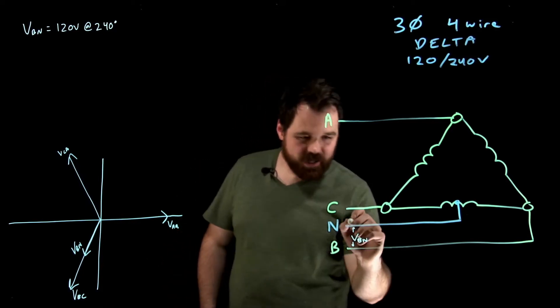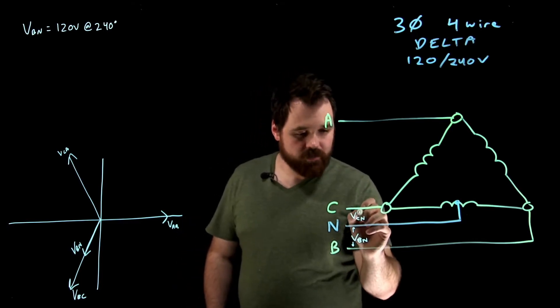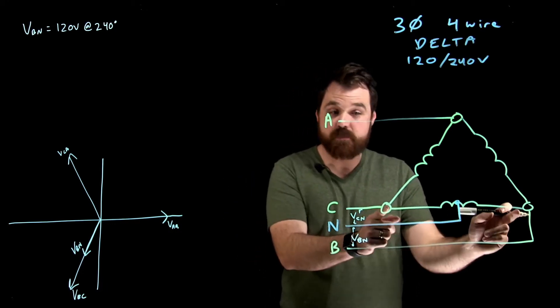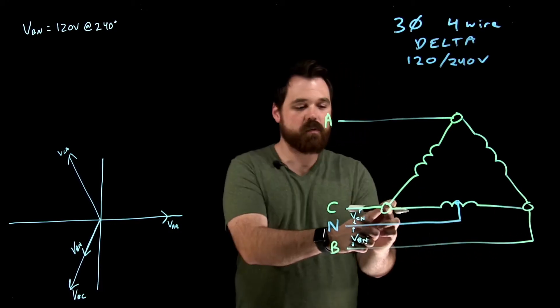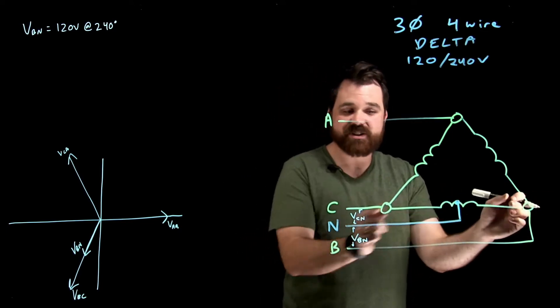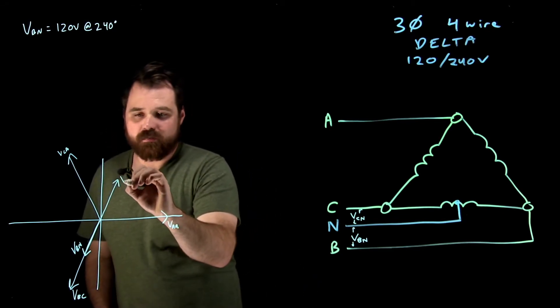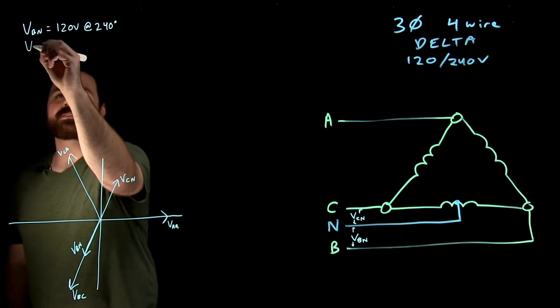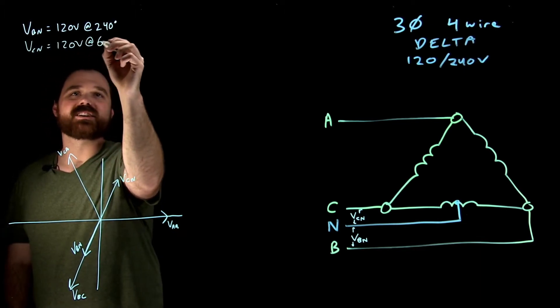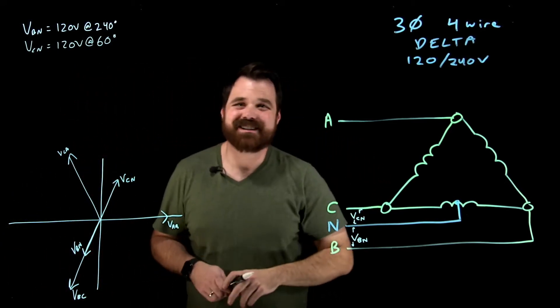Now, the other one here we would call VCN. And if we were plotting that onto a phasor diagram, it's on the B phase, but we're going to measure from C to N. So the opposite direction of B to C, which actually puts it up here, VCN. In this case, that would be C to N, 120 volts at 60 degrees. So any loads you put on that would be based off of that 60 degree voltage.